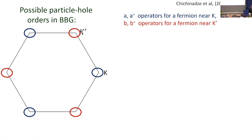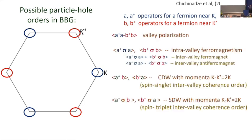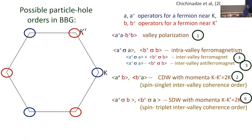It's completely a bookkeeping process. You can write several combinations of A and B — they all have names, and some have more than one name, which was a source of confusion among theorists. For example, charge density wave (A†B and B†A with momentum K minus K') was called simply charge density wave for spin singlet and intervalley coherence order. The same for spin — it's either spin density wave or spin triplet intervalley coherent order. It's all the same physics.